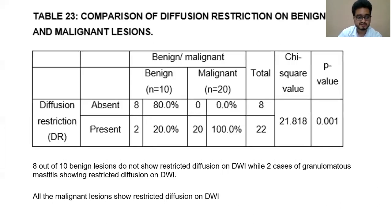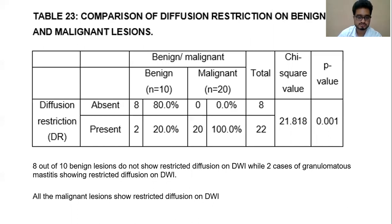8 out of 10 benign lesions did not show restricted diffusion on DWI, whereas 2 cases of granulomatous mastitis did restrict. All malignant lesions also showed restricted diffusion on DWI.